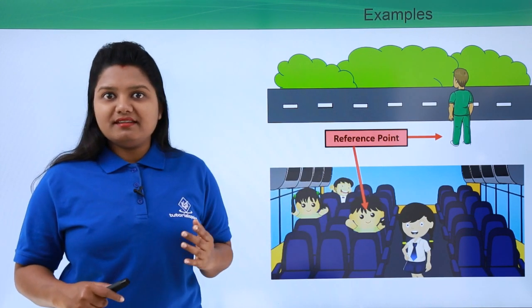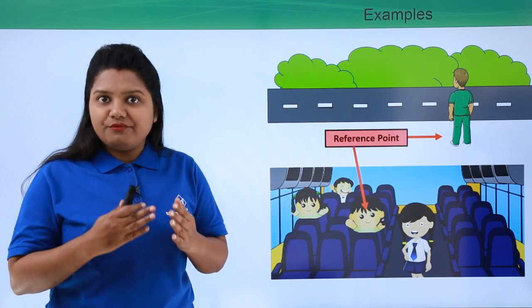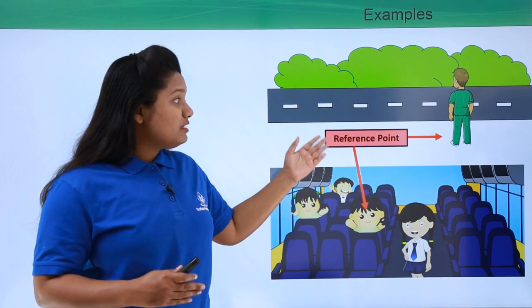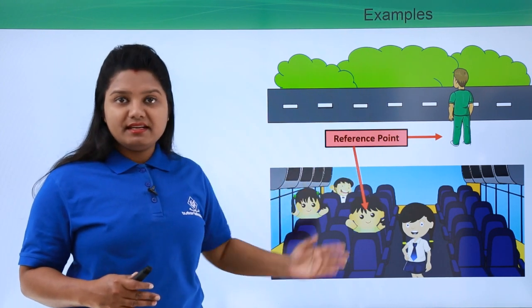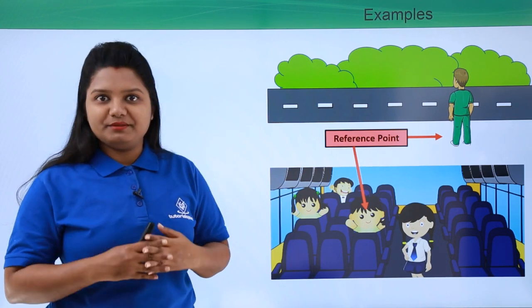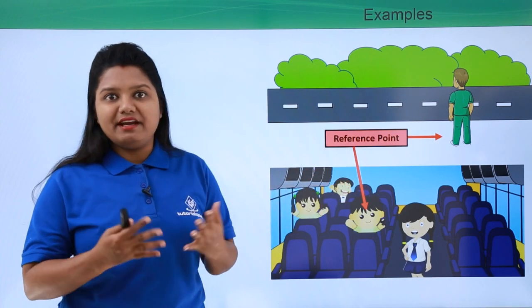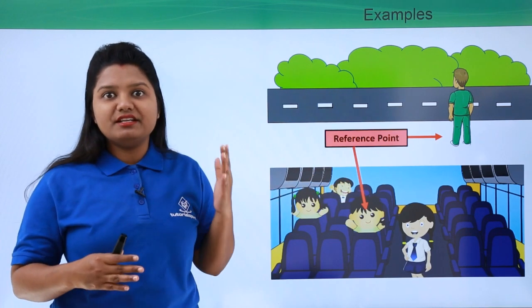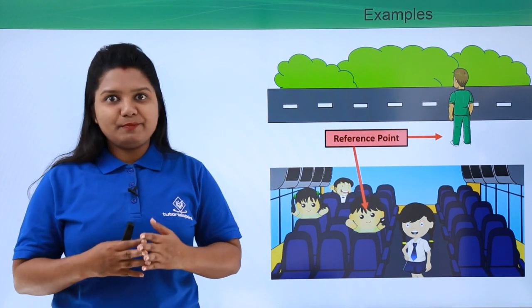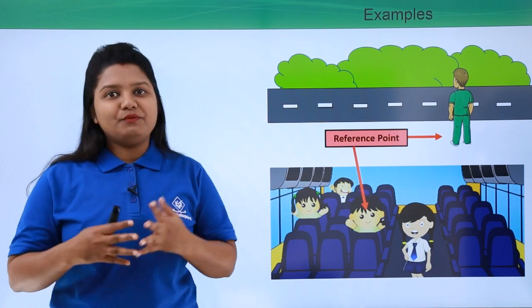This difference arises simply because we took a different reference point in the second case. It all depends upon the reference point — the point from which the situation is observed — whether an object appears to be at rest or in motion. Whenever we change the reference point, the whole scenario may seem totally different. That was all about reference points. Thanks for watching.